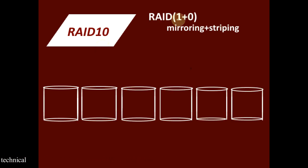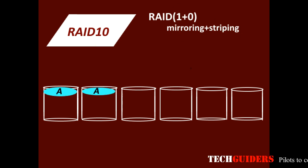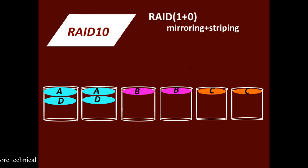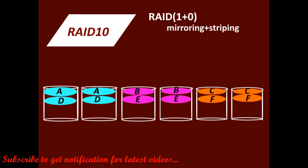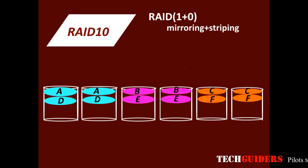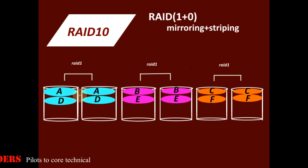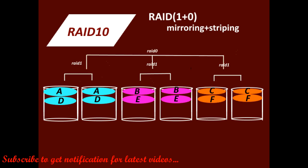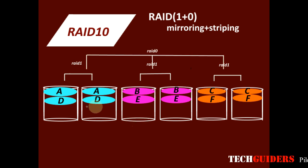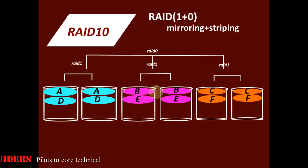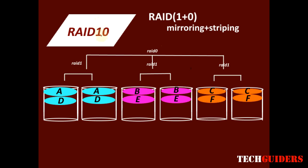RAID 10 is actually RAID 1 in which the data is mirrored and then striped. If we divide this into three groups, we can see that within each group there is a RAID 1 level with mirroring, and between the groups there is a RAID 0 level with striping. Within each group the data is duplicated, and between the groups the data is striped. Thus, mirrored and then striped — hence, RAID 1+0 or RAID 10.